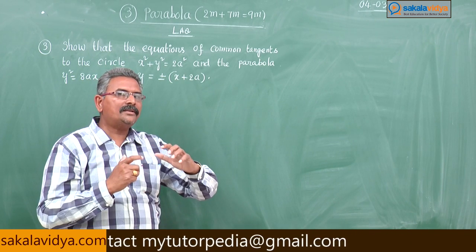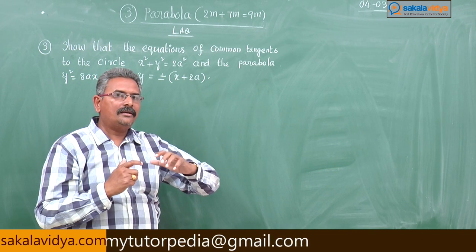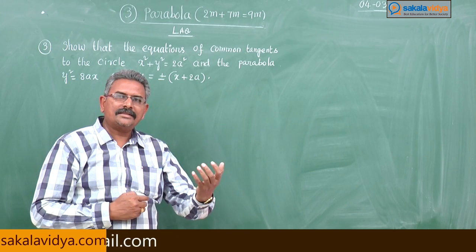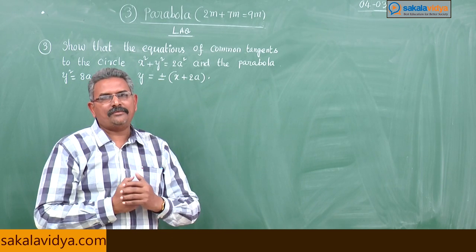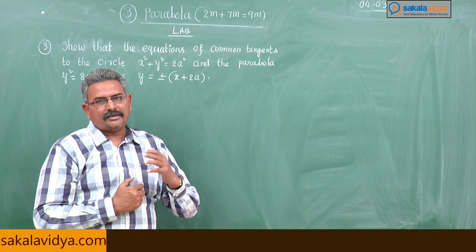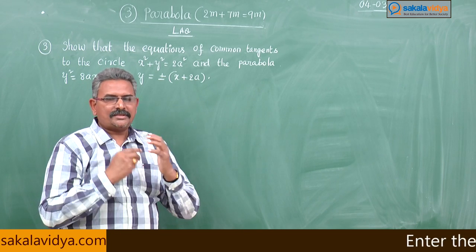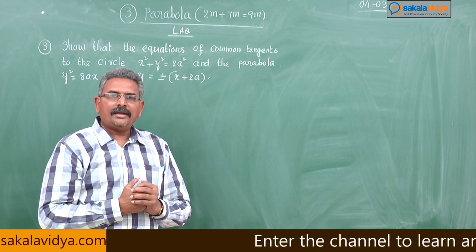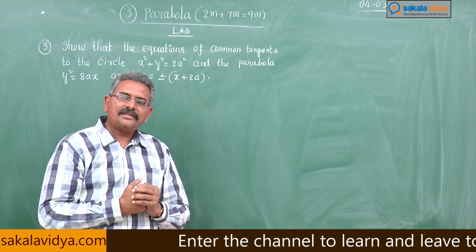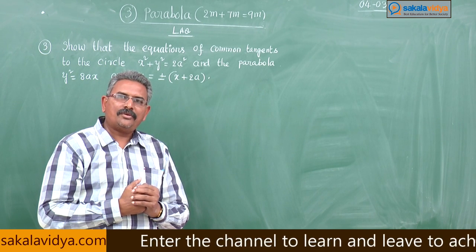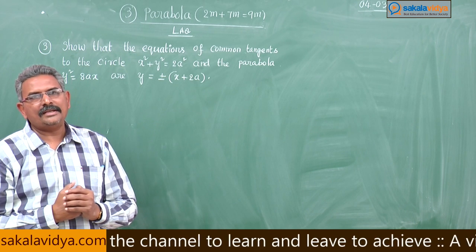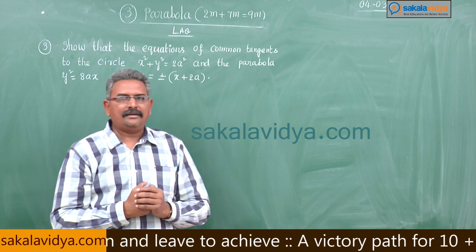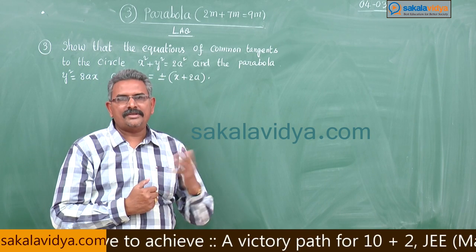We have to find the common tangents to both the circle and the parabola. First, let us make a plan. Any equation of the tangent to the parabola can be taken as y = mx + c, as we have already discussed in the last episodes.